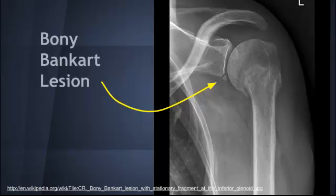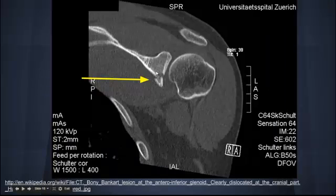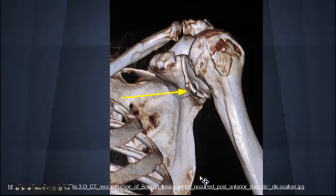However, you will be able to see a bony Bankart lesion on X-ray. Although it occurs in a much smaller percentage, you need to look out for it. This occurs on the anterior inferior part of the glenoid rim as the humeral head dislocates anteriorly past it. Here you can see the fracture off the glenoid rim on CT scan and on a 3D reconstruction.